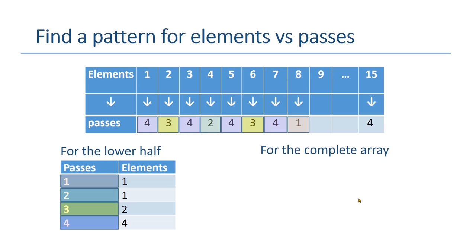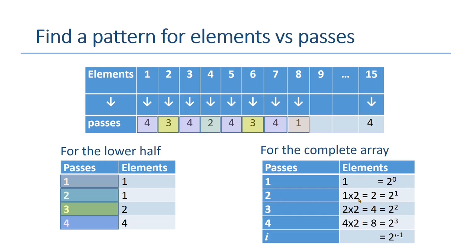To get the passes for the complete array, we only need to multiply it by 2, except for the middle item, which is 1. Here we can see the relationship between passes and elements. For 1 pass, we just have 1 element. For 2 passes, it is 2 raised to the power of 1. 3 passes, 2 square, and so on. If we want to generalize it, we have i passes for 2 raised to the power of i minus 1 elements.